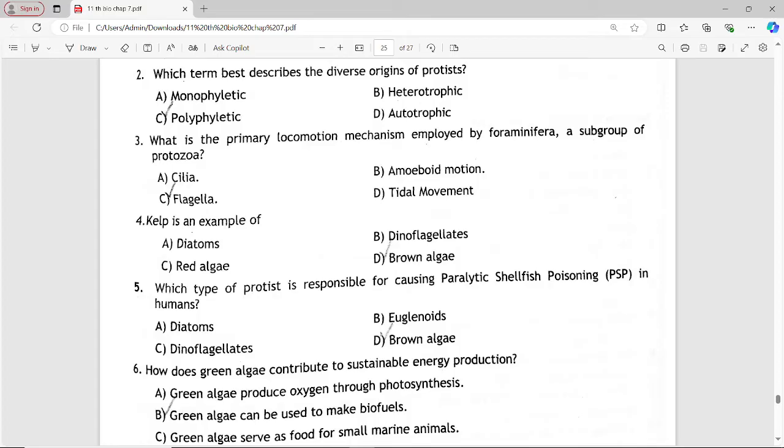Next MCQ: What is the primary locomotion mechanism employed by foraminifera, a subgroup of protozoa? Options are: cilia, amoeboid motion, flagella, tidal movement. Answer is option C: flagella.